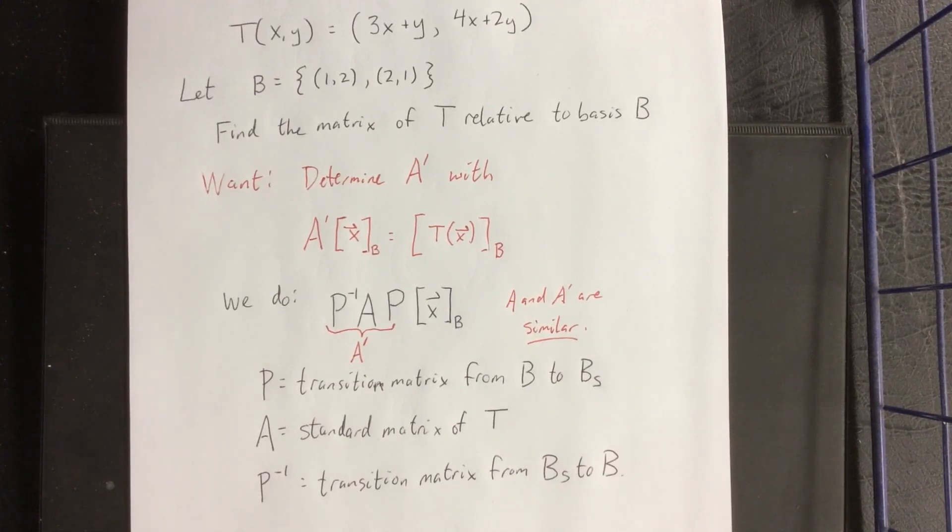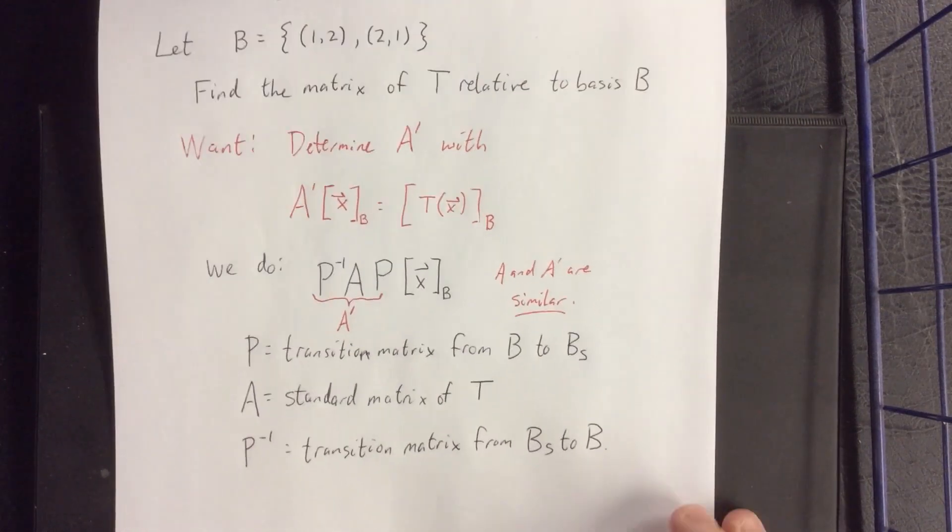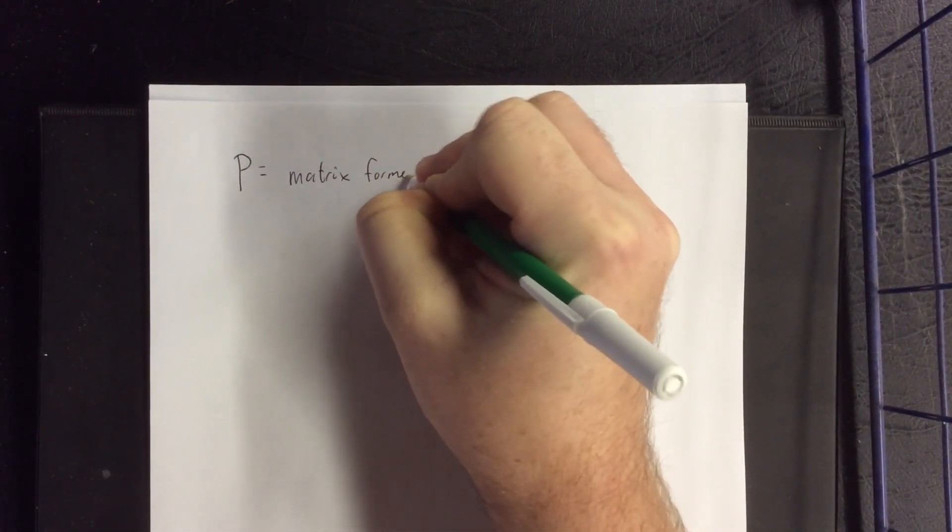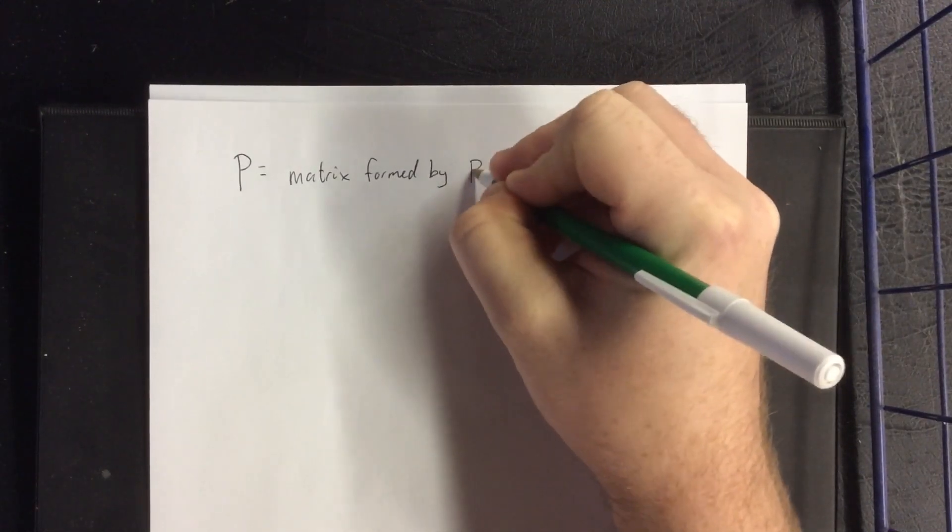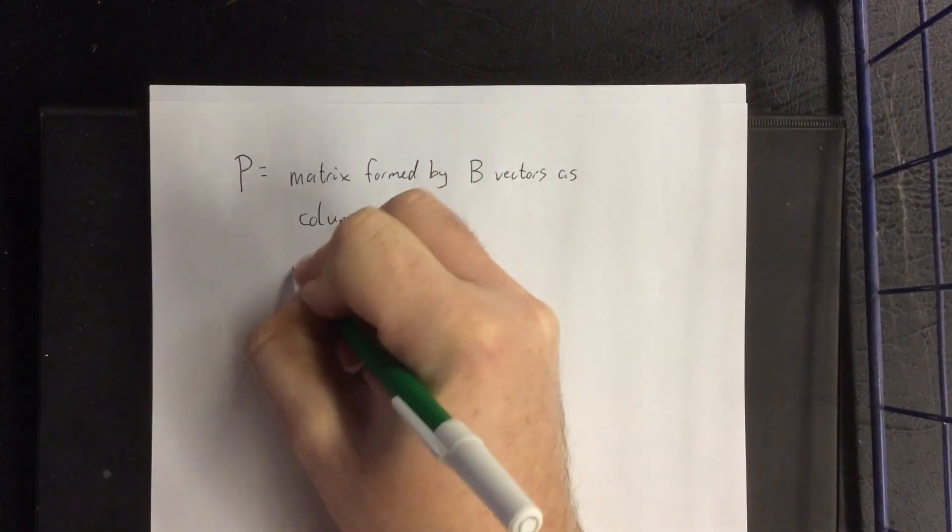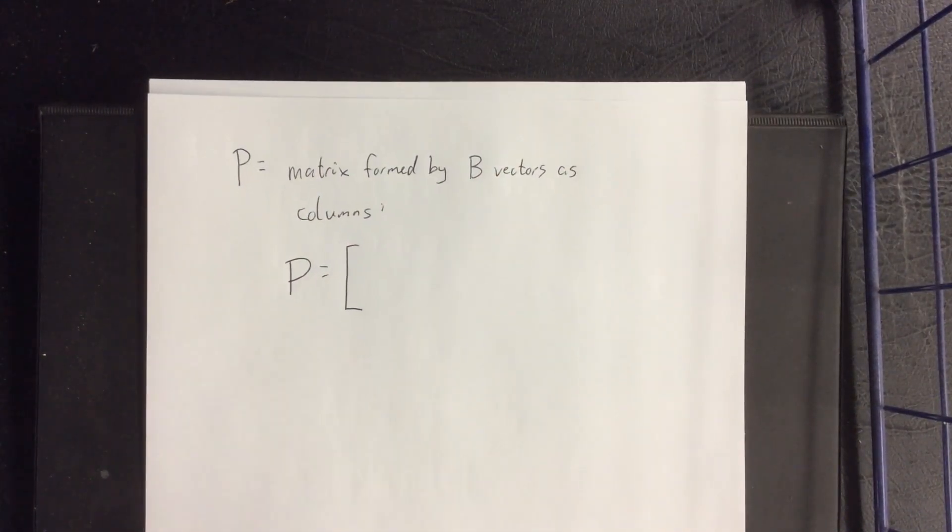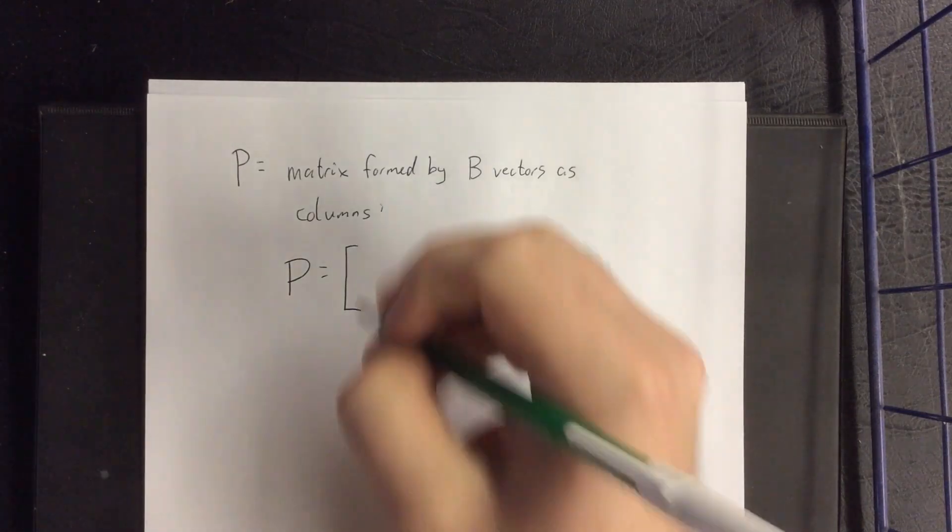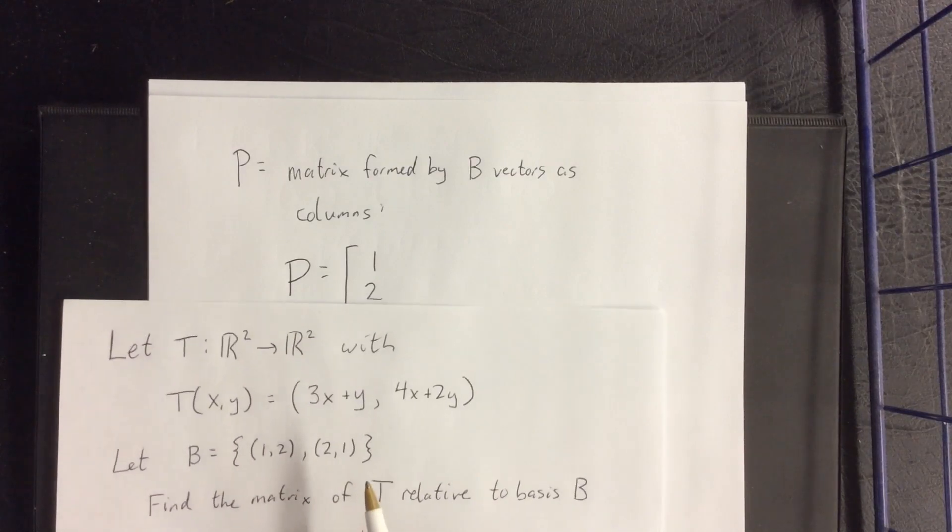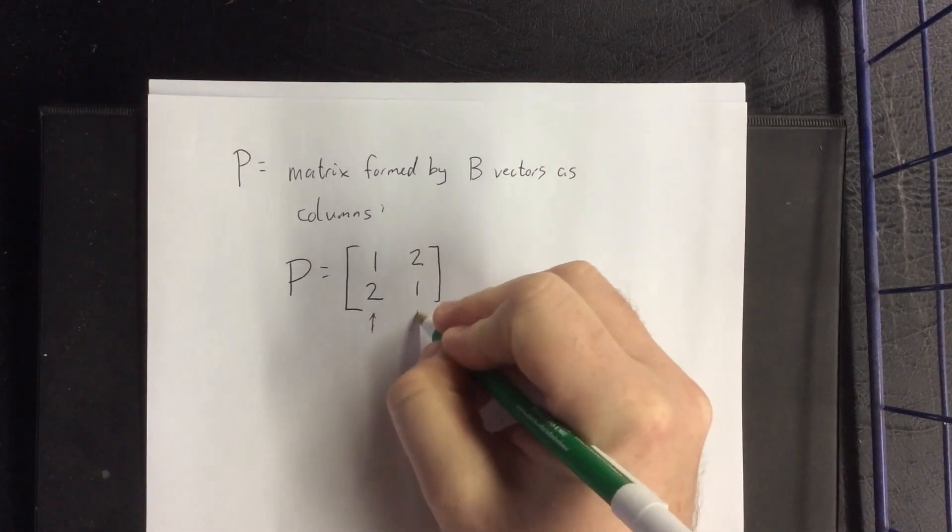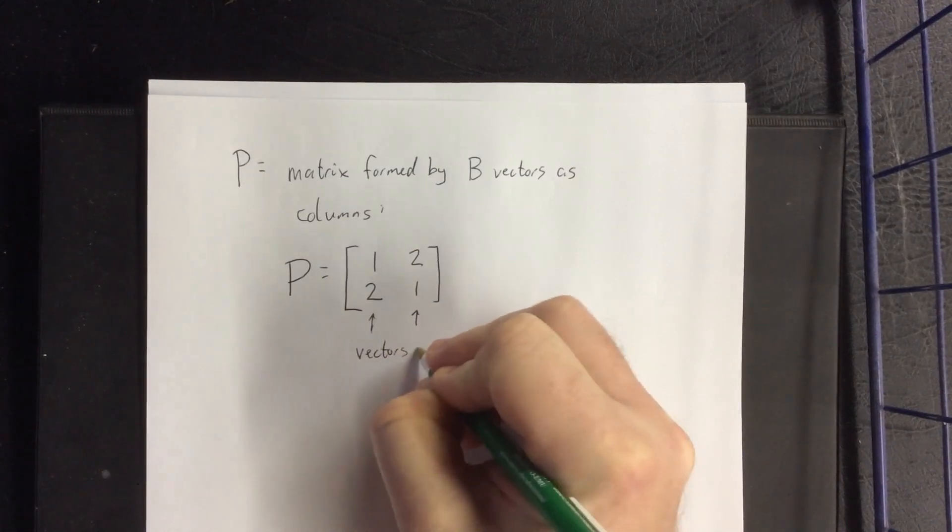So with those things in mind, P is determined by the two vectors that are in our basis B. The matrix P is going to be the matrix formed by B vectors as columns. So the matrix P will be a 2×2. The first column of P is going to need to be the first vector that's in the basis B, the vector (1,2). And the second column of P is going to be the second vector of the basis B, (2,1).